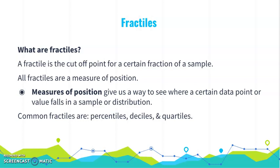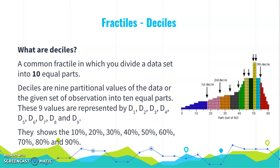Common fractiles that we're going to discuss are percentiles, deciles, and quartiles. So deciles, what are they? They're a common fractile in which you divide the data set into 10 equal parts. If you look at this graph, there's 10 different colors and each one of those little boxes represents a data set, and we've divided it so each color has the same amount of data values in it.